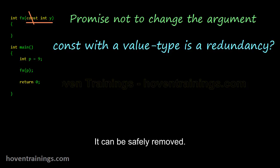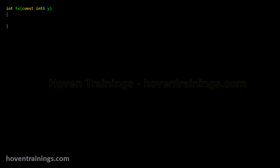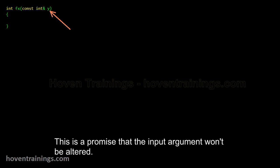This code shows a constant reference type of parameter. This is a promise that the input argument won't be altered.